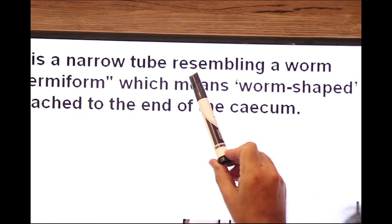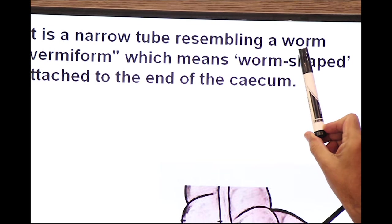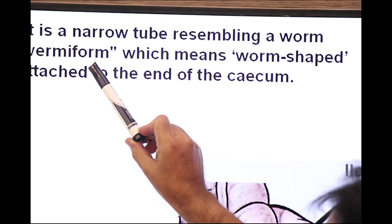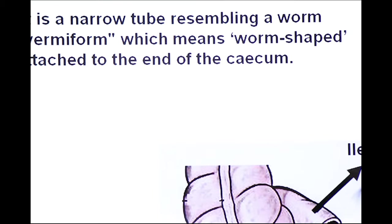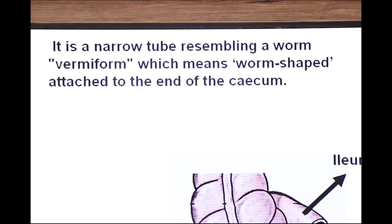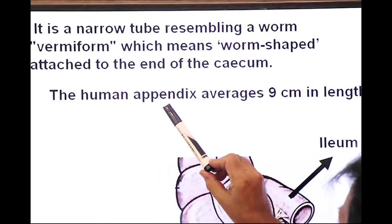It is narrow tube resembling a worm, worm like in shape. It is called vermiform appendix, vermiform which means worm shaped and attached to the end of cecum. Now what is the size of human appendix?